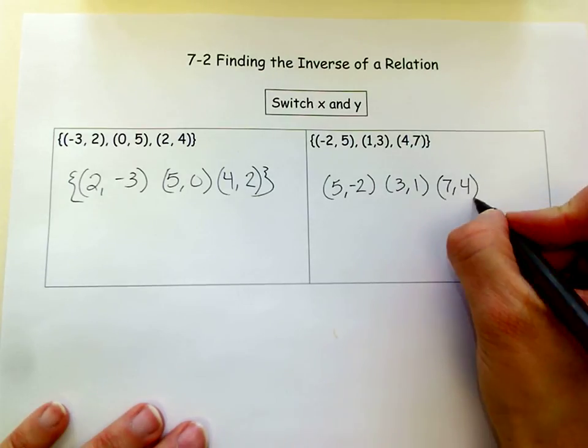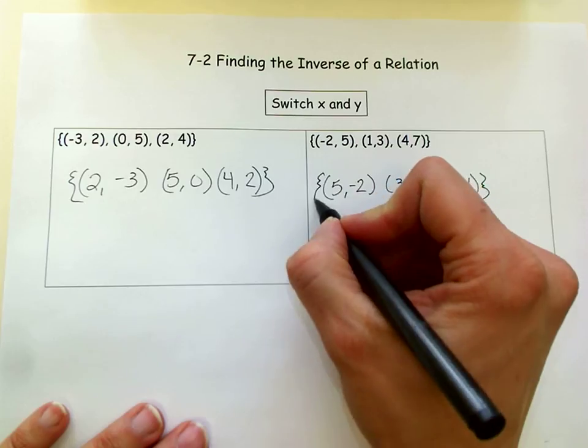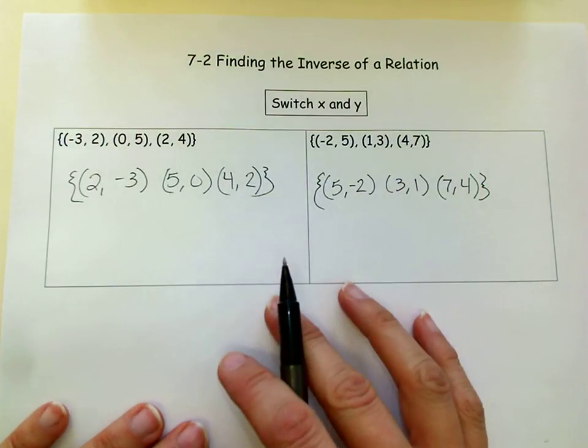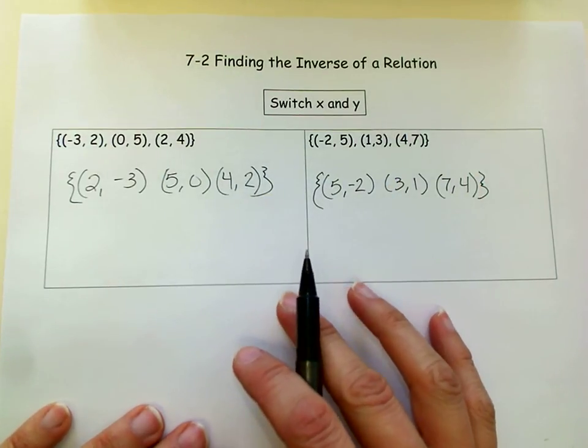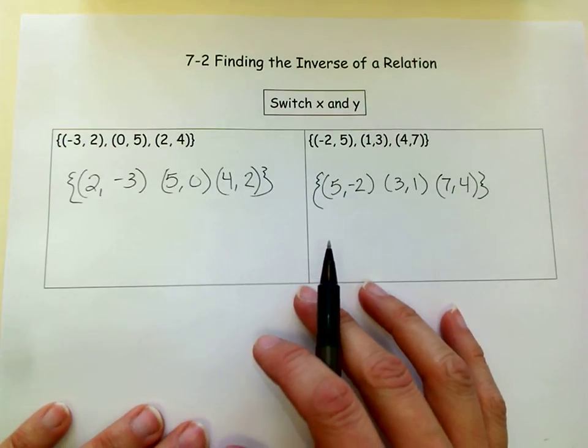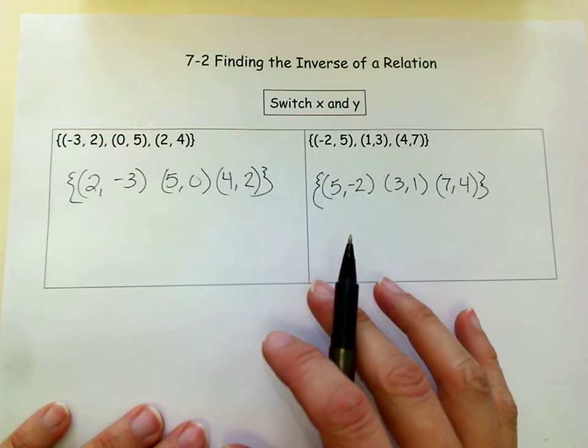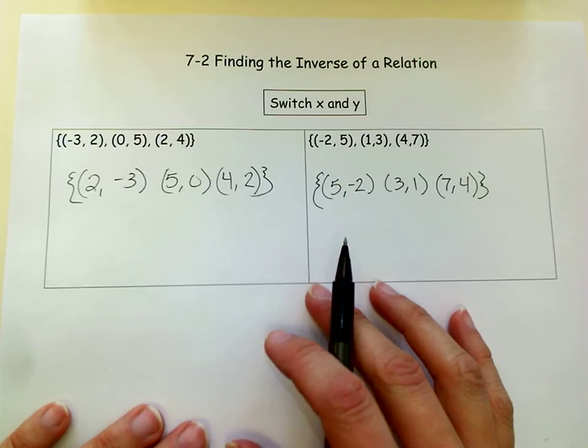And this might seem really simple and like you don't have to use your brain too much, but I really want you to understand that switching x and y's is what gets you the inverse. So this comes in really handy. So anytime you're thinking about an inverse, you want to think about the x value and the y value switching.